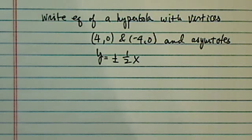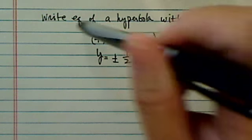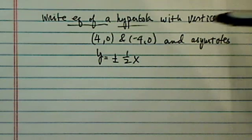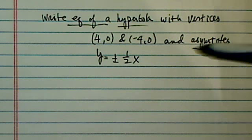Hi, this is Dr. Pan, host of Tucson Math Doc channel on YouTube. I have an interesting question here. We're asked to write an equation of a hyperbola with vertices and asymptotes.